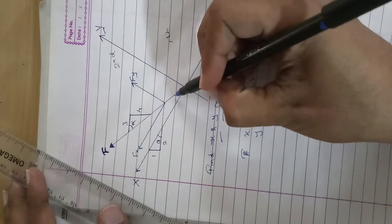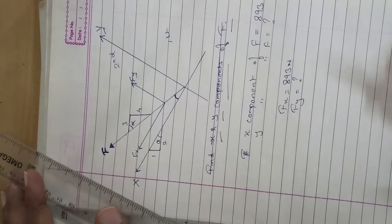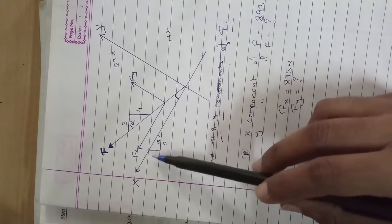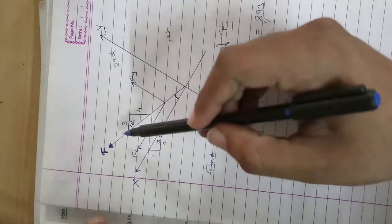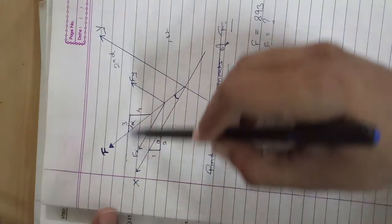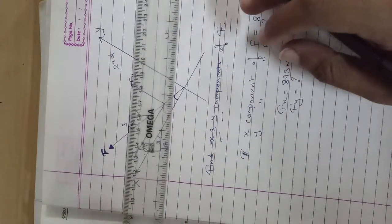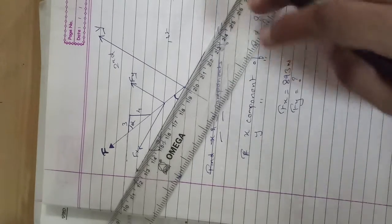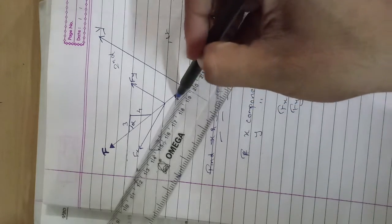Now you need the angle of F with respect to X. Is that angle available to you? No. The angle of F has been given, but in the form of a slope — and with respect to which axis? With respect to the horizontal X. But are you working with respect to horizontal X? No. You are working with respect to the inclined X. So you need the angle of F with respect to the inclined X.